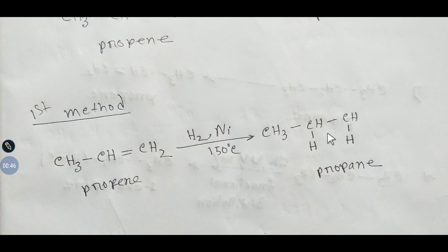So here hydrogen will add to this pi bond. This carbon will get one hydrogen and this carbon will also get one hydrogen. So we are getting propane. This is alkane but this is alkene.